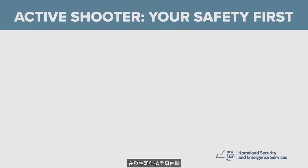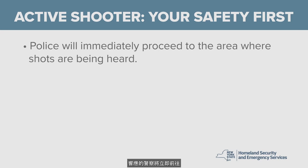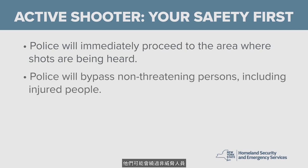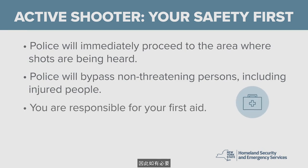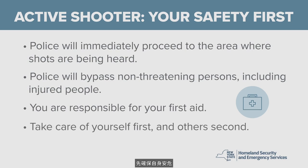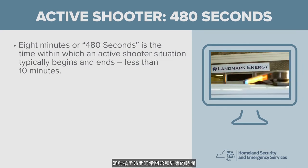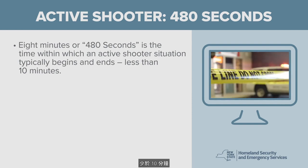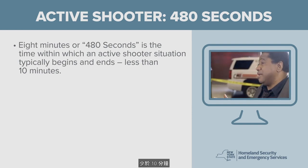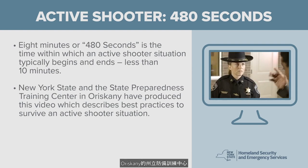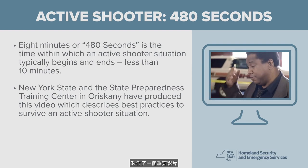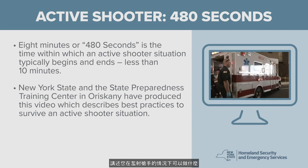In an active shooter situation, the responding police will go immediately to the area where shots are being heard or were reported. They will likely bypass non-threatening persons, including injured people. Therefore, you are responsible for your own safety and first aid if necessary — take care of yourself first and others second. Eight minutes, or 480 seconds, is the time within which an active shooter situation typically begins and ends. New York State and the State Preparedness Training Center in Oriskany have produced an important video about what you can do in an active shooter situation. Visit youtube.com/nysdhses to view the video.